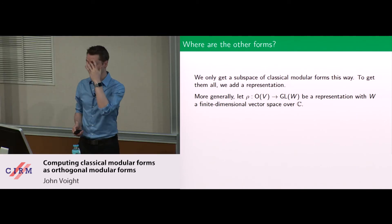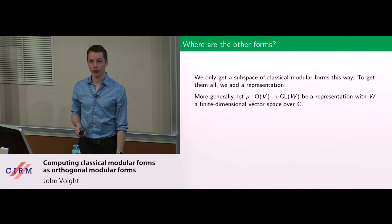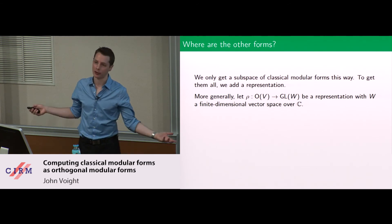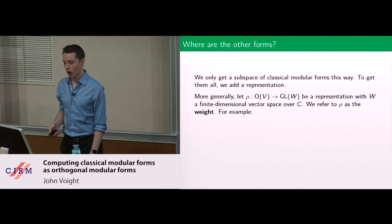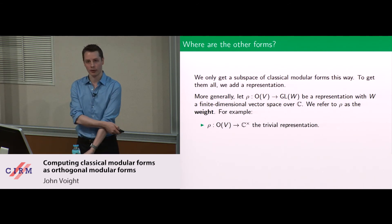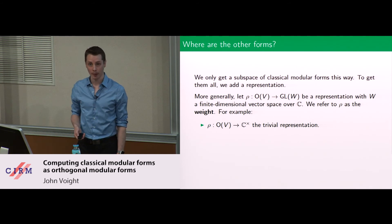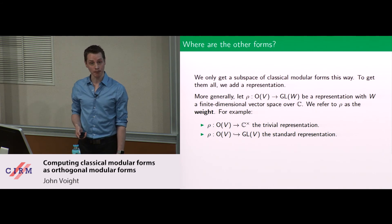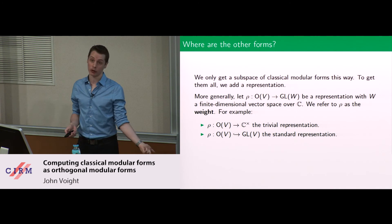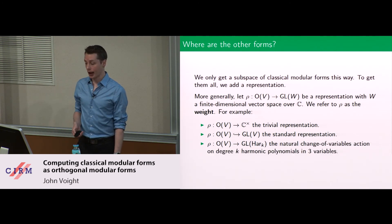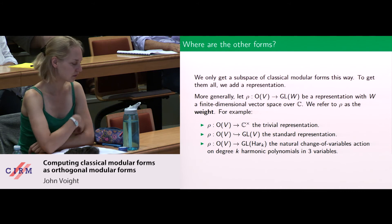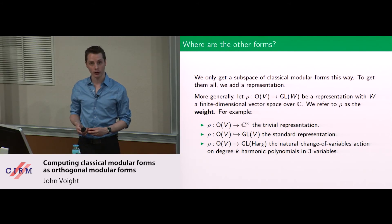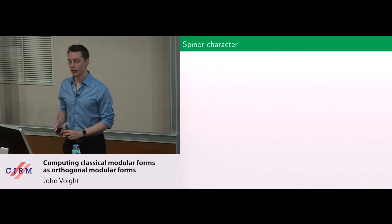To get all of them, we're going to add a representation. We took maps to C, so let's take maps to a representation — that's the idea. I'll let rho be a representation of my orthogonal group over Q into some finite-dimensional C-vector space. These are the weights. The trivial representation was called trivial weight. You could take the standard representation, where V has its orthogonal group acting on a three-dimensional vector space. For ultimately higher weight, you take harmonic polynomials in three variables of a given degree, giving a natural representation.